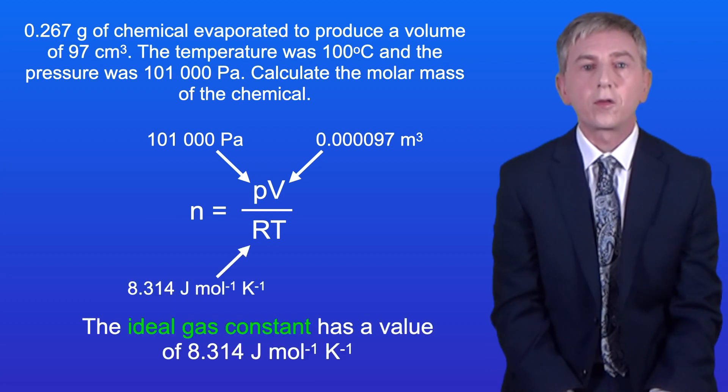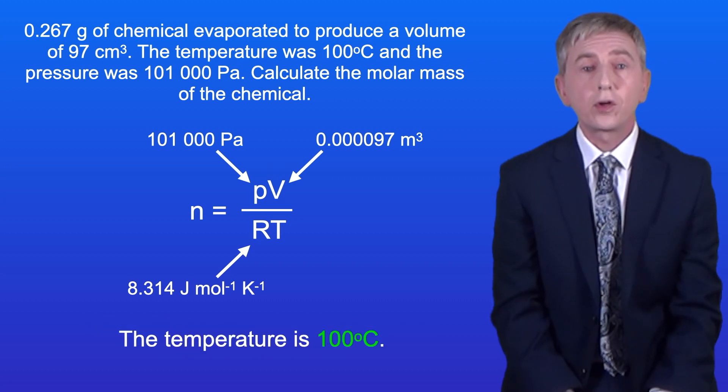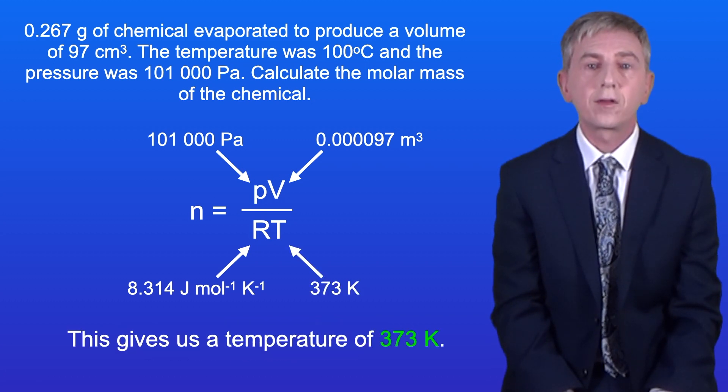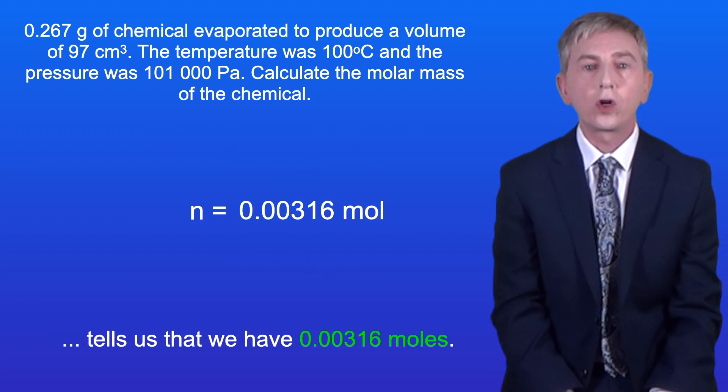The ideal gas constant has a value of 8.314 joules per mole per kelvin. The temperature is 100 degrees celsius. We need to convert that to kelvin by adding 273. This gives us a temperature of 373 kelvin. Putting these numbers into the equation tells us that we have 0.00316 moles.